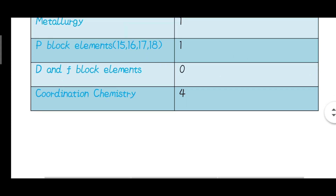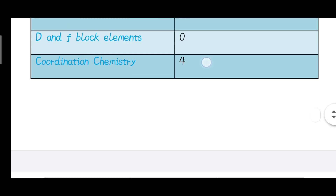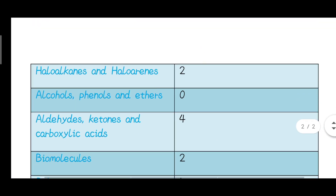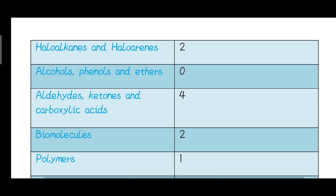Coordination chemistry is an important chapter with a question at a moderate level. Haloalkanes also have a question. In organic questions, multiple chapter concepts are involved — for example, finding a major product or completing a reaction. These questions are chapter-combined and very important.